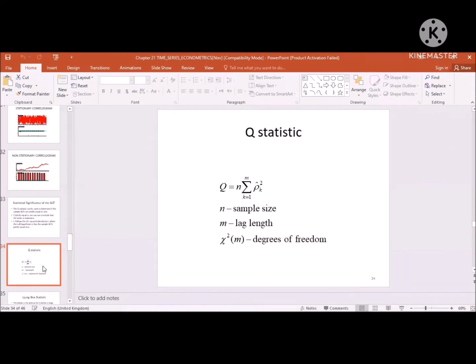Now every ρ has a value. ρ₁ has a value, ρ₂ squared, ρ₃ squared. To make this scale, then we will sum it up and multiply it with N. So that's your value, the Q statistic will arrive.